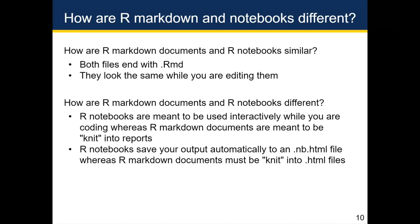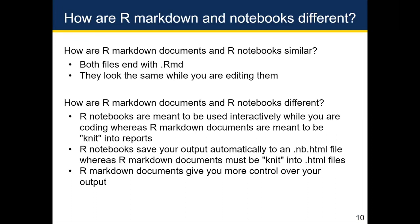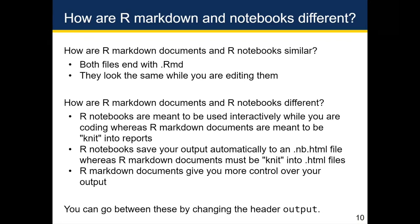Another difference is that when you're working in an R Notebook, your output automatically gets saved to an .nb.html file. On the other hand, R Markdown documents only get converted into .html files when you press the knit button. So nothing happens automatically with R Markdown documents. You can go back and forth between R Notebooks and R Markdown documents simply by changing the output field in the header.